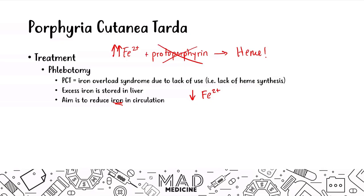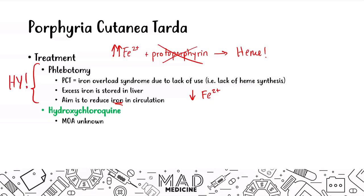You can also use hydroxychloroquine to treat these patients, though the mechanism of action is not well understood — and you don't need to know it. The key takeaway is that phlebotomy is the most high-yield treatment for porphyria cutanea tarda, along with avoiding triggers such as alcohol and sun exposure.